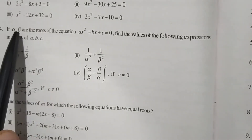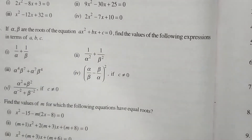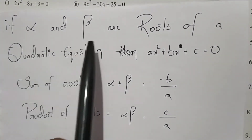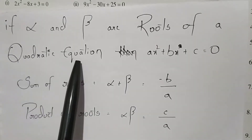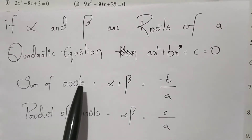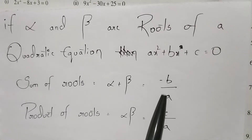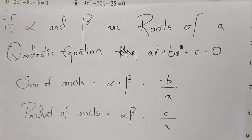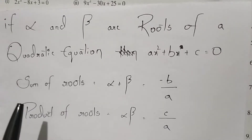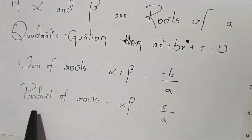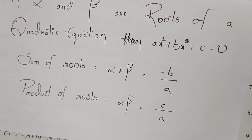Alpha and beta are roots of this equation. As we know, if alpha and beta are roots of a quadratic equation ax squared plus bx plus c equals zero, then the sum of roots, that is alpha plus beta, will be minus b by a, and the product of roots, that is alpha into beta, will be c by a. You have to understand these two formulas: sum of roots is minus b by a and product of roots is c by a.